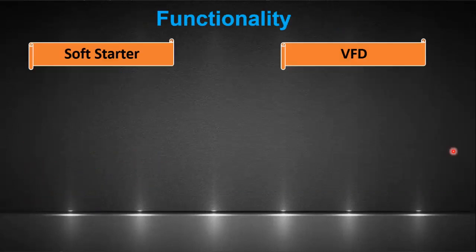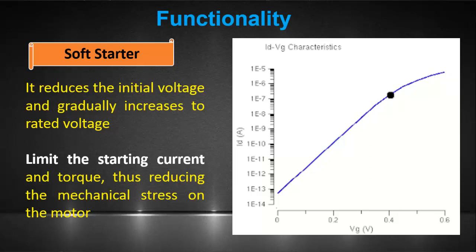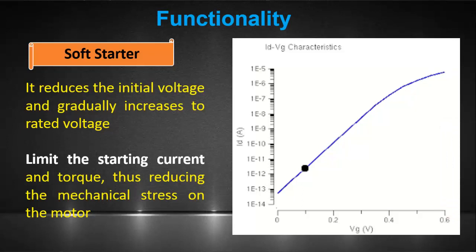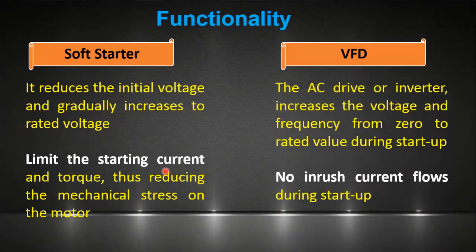Now we will see the main differences between these two motor control devices. A soft starter is a device used to reduce the initial voltage supply to the motor during startup, which results in low inrush current as compared to a DOL starter. By adjusting the firing angle of thyristors, the applied voltage gradually increases from zero to full rated voltage, helping to limit the starting current and torque, thus reducing the mechanical stress on the motor.